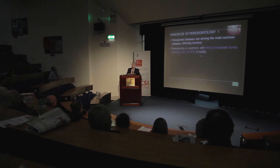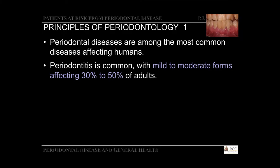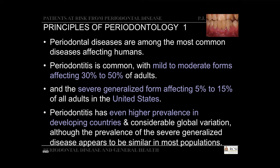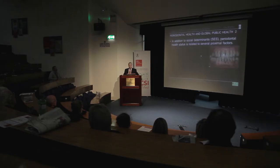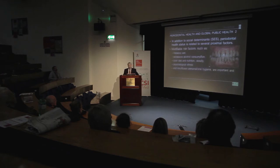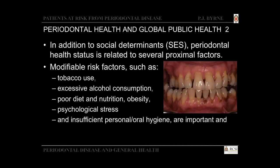Periodontal diseases are common and affect a lot of people right around the world. Mild to moderate forms affect 30 to 50 percent of adults, and severe forms affect a smaller number — 5 to 15 percent of adults in the US. Periodontitis has an even higher prevalence in developing countries and there's quite a global variation. In addition to socioeconomic factors, periodontal health status is related to modifiable risk factors such as tobacco use, excessive alcohol consumption, diet, and psychological stress.